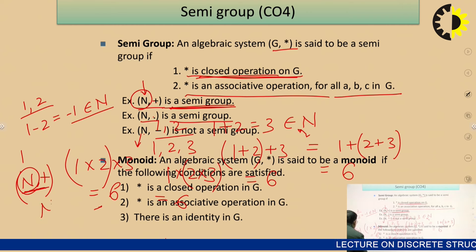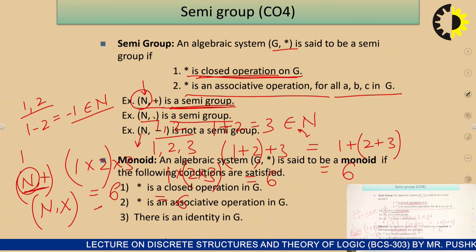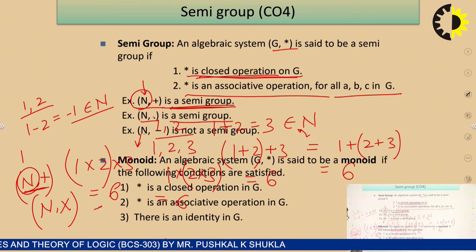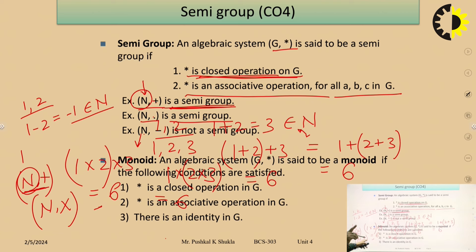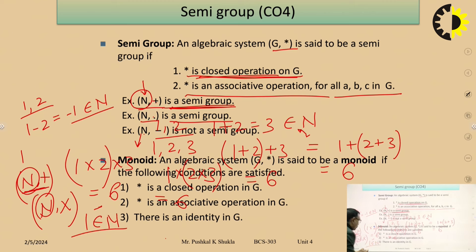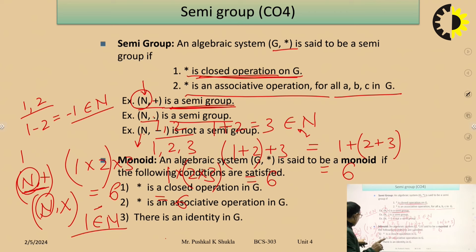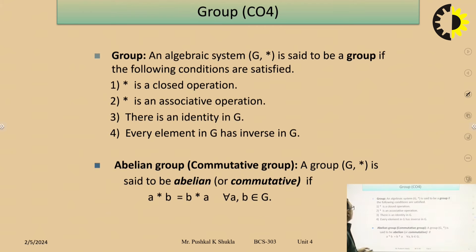Now consider (N, ·). Multiplication also holds the closure property and the associative property. And 1 is the multiplicative identity, and 1 is indeed part of the natural numbers. So there exists an identity element 1 in N. Therefore (N, ·) — multiplication on natural numbers — is a monoid.